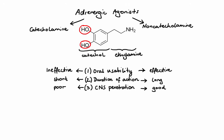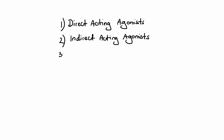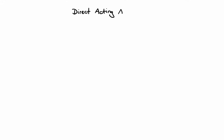There are three types of adrenergic agonists: direct-acting agonists, indirect-acting agonists, and mixed-action agonists. Direct-acting agonists produce their effects by binding to alpha or beta receptors and mimicking the actions of epinephrine, norepinephrine, and dopamine that naturally occur in our bodies. Epinephrine, norepinephrine, and dopamine are non-selective, meaning they can act on both alpha and beta receptors, and they are also catecholamines, which means their main route of administration is by injection.